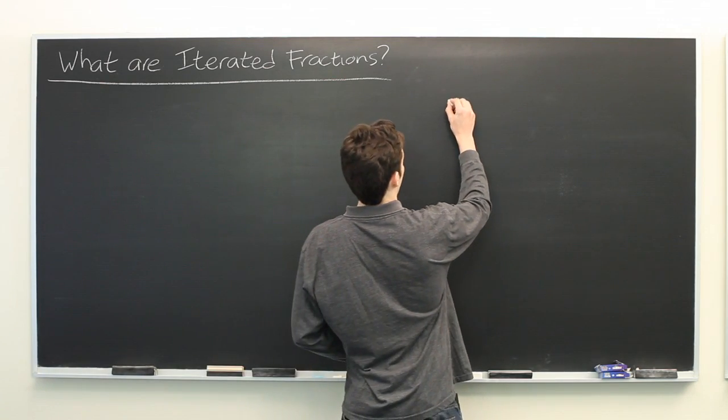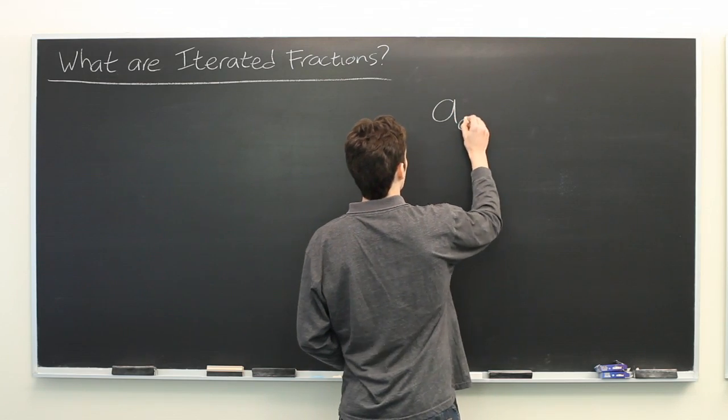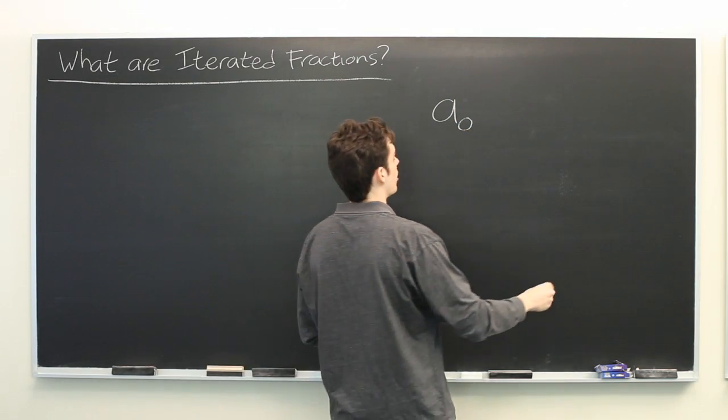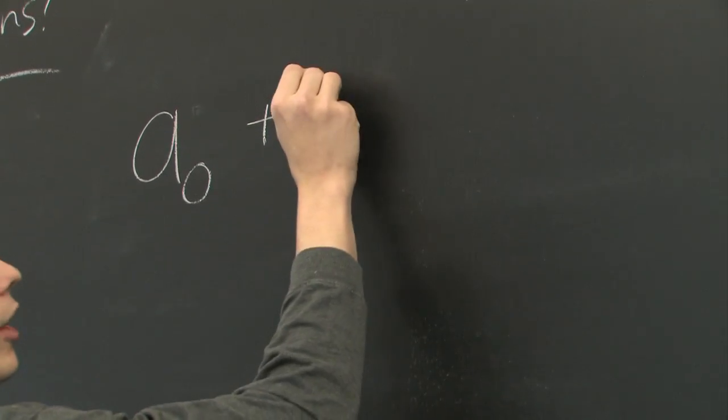To start off an iterated fraction, we'll use some constant. We'll say a0, or a sub 0, plus a fraction.